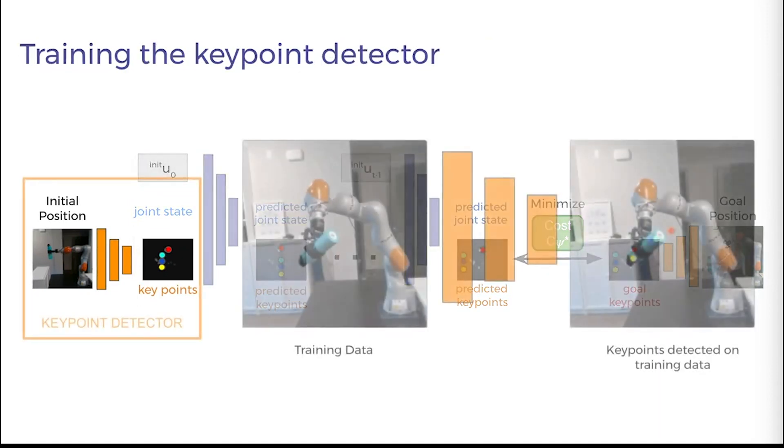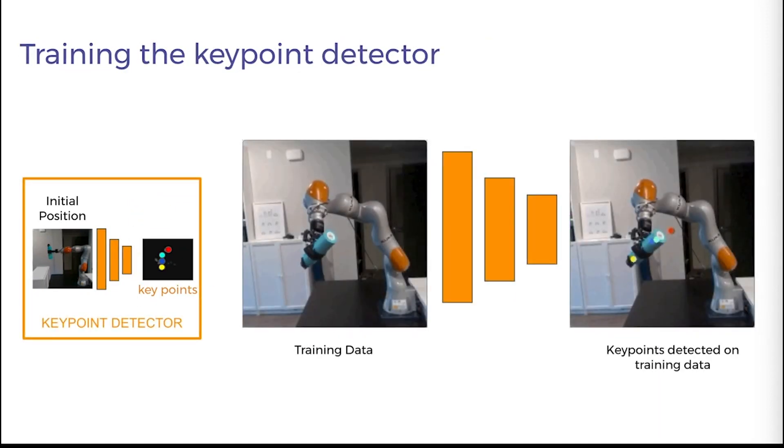The keypoint detector is trained on videos of the robot manipulating the gripped object by only varying the end effector rotation through each episode long data point. Each data point starts at a different robot configuration.